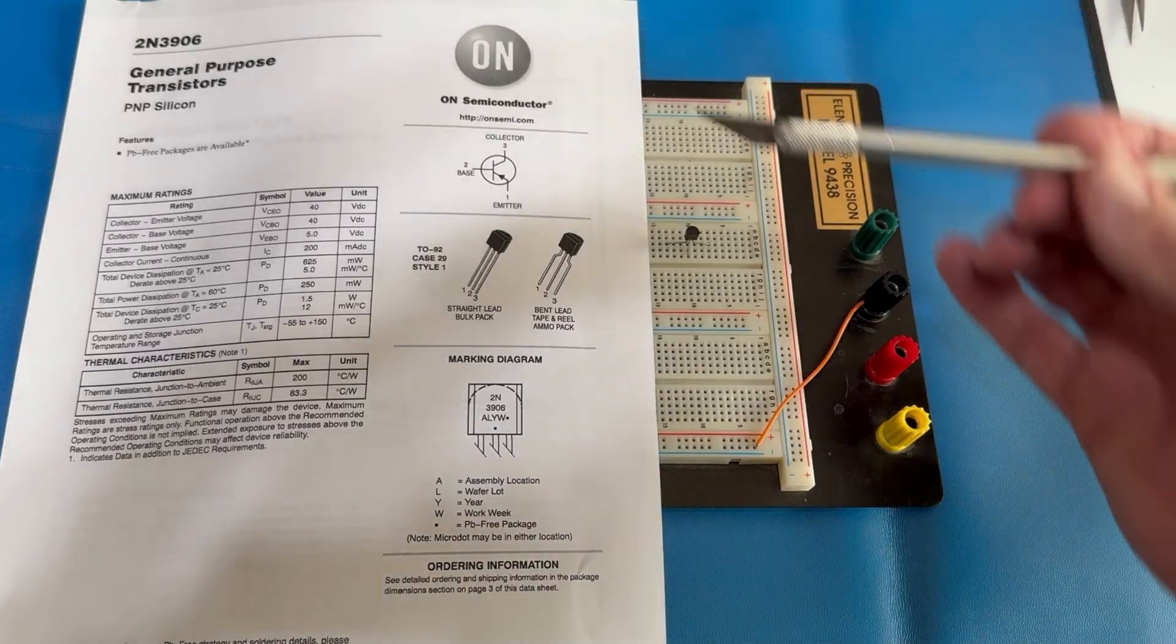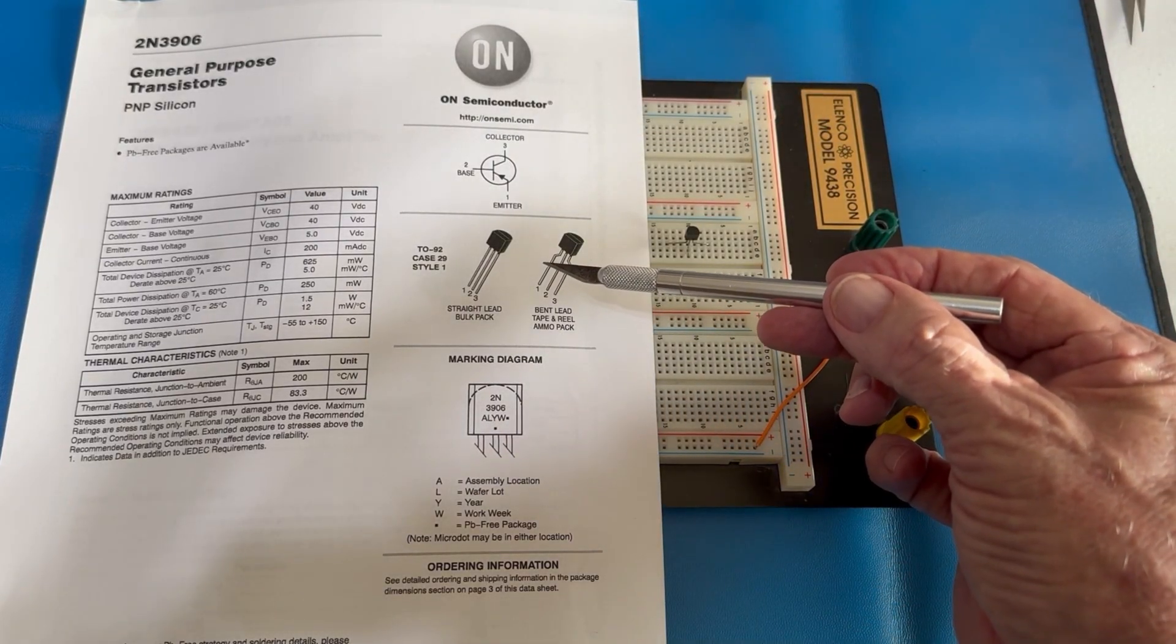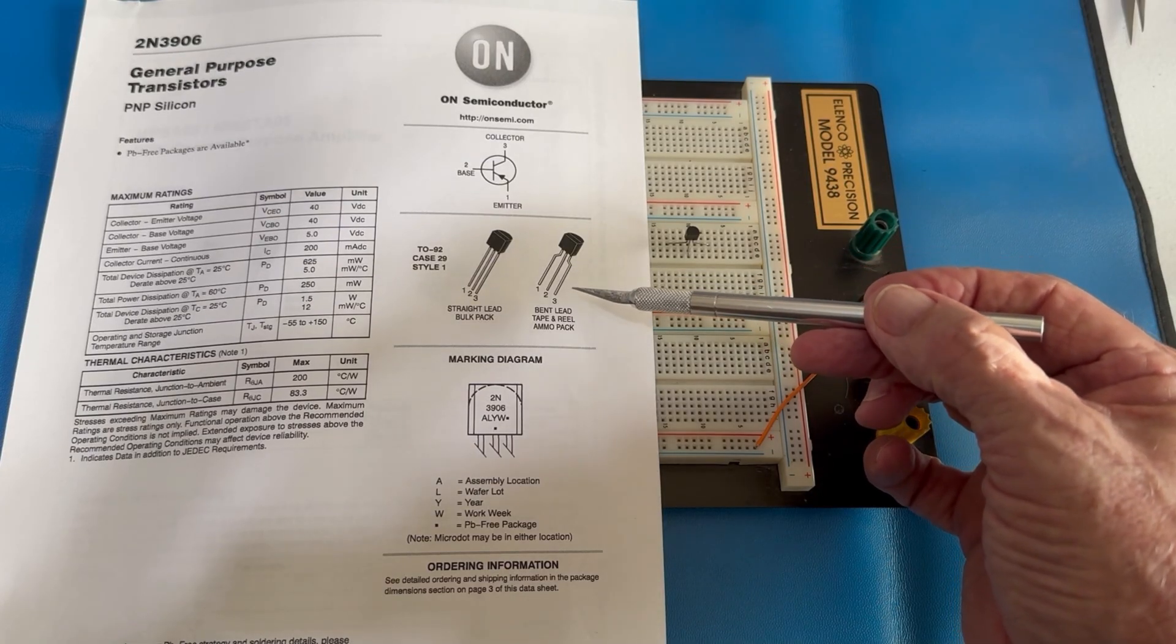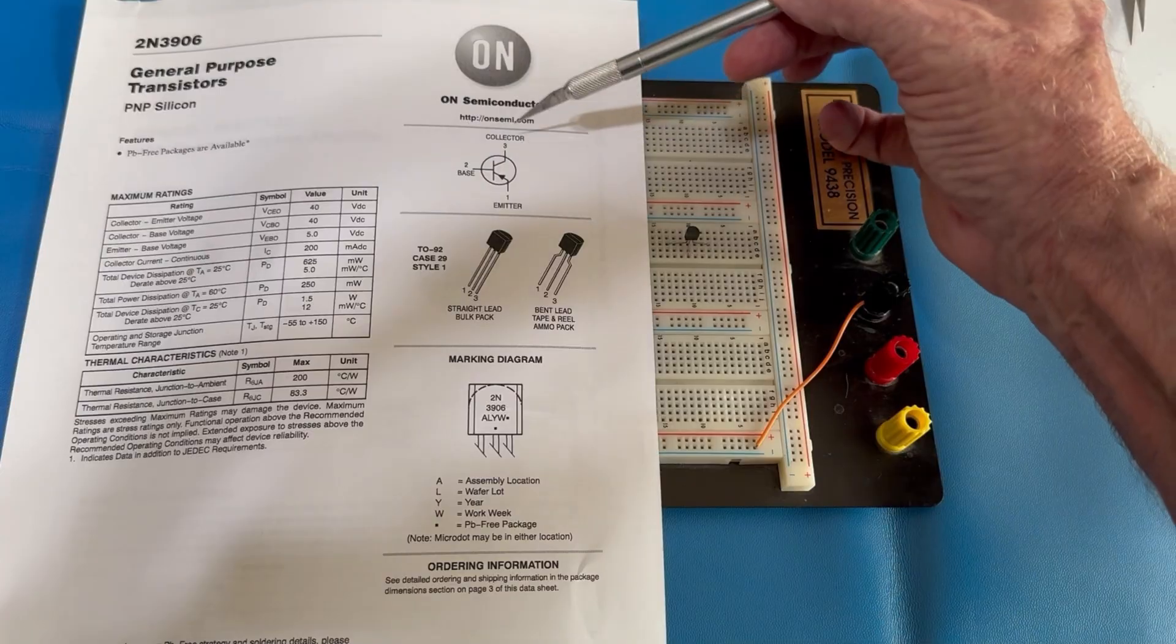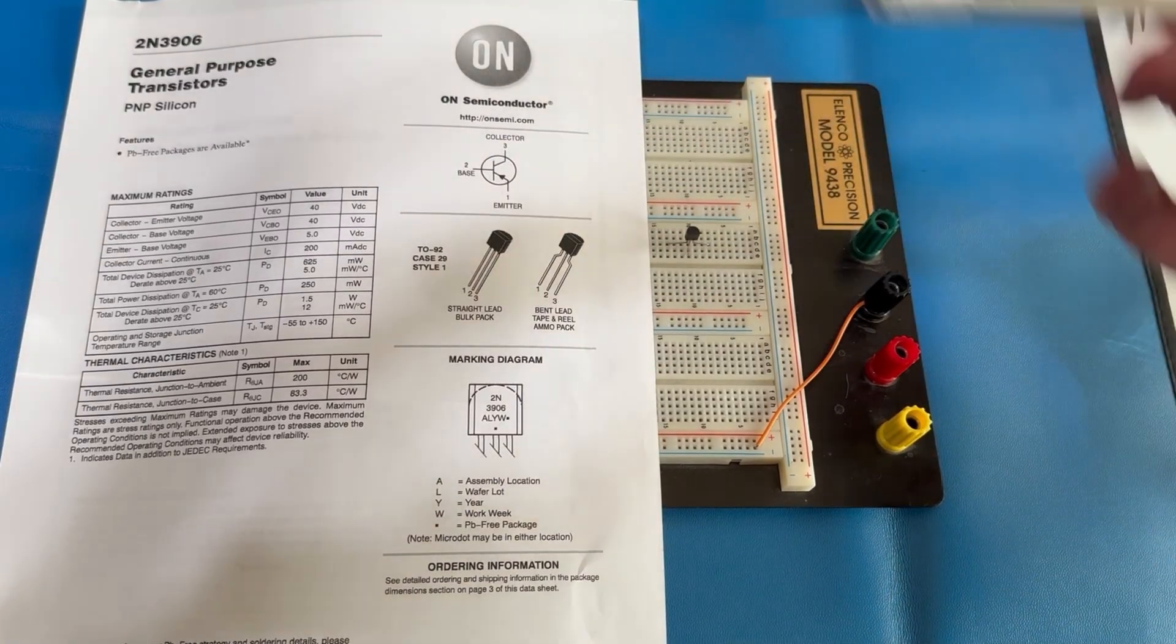This too is a TO-92 case. That tells you that pin 1 is the emitter, pin 2 is the base, and pin 3 is the collector. As you can see here: pin 3 collector, pin 1 emitter, pin 2 is base.